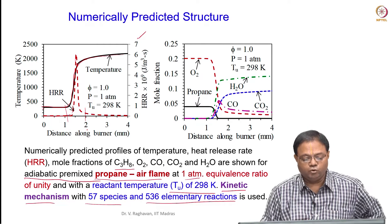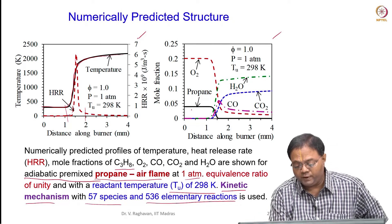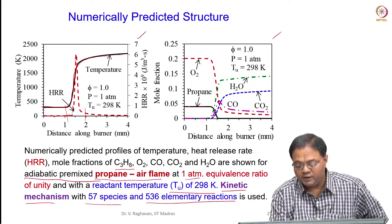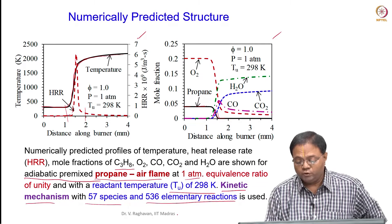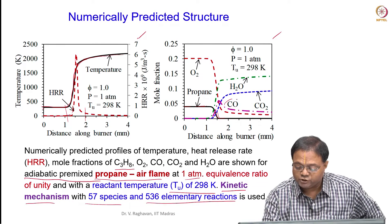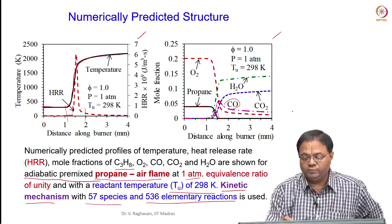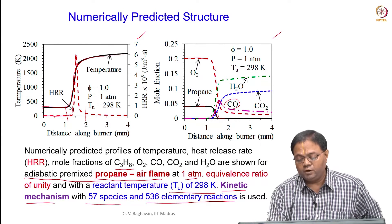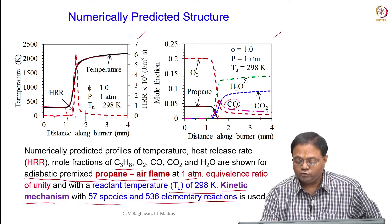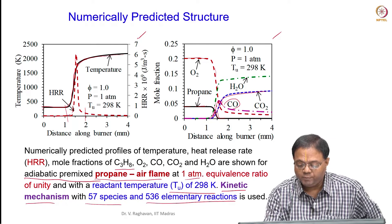That is the reaction zone thickness. On the right-hand side graphs, you will see that propane is consumed rapidly in the reaction zone. Some CO is produced and then consumed. Oxygen, which is coming in at a much higher mole fraction than propane, is also consumed in the reaction zone. Products are formed — you can see the increase in CO2 concentration and water vapor.